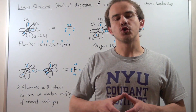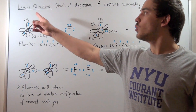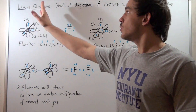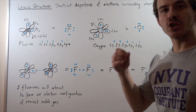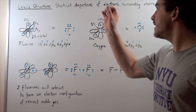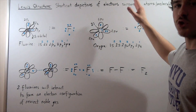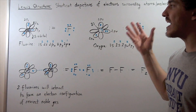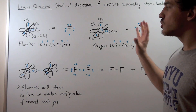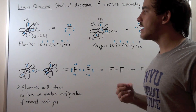In this lecture we're going to talk about Lewis structures. Lewis structures are simply shortcut depictions of electrons surrounding our atoms or molecules. Let's begin with examples.